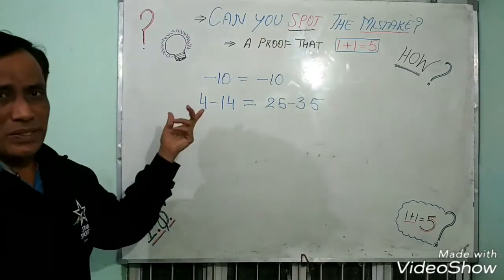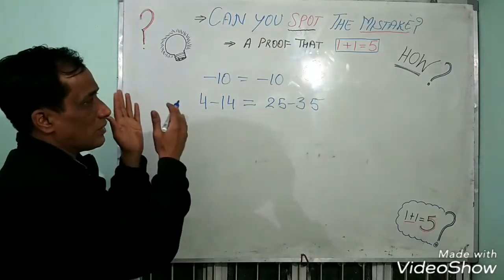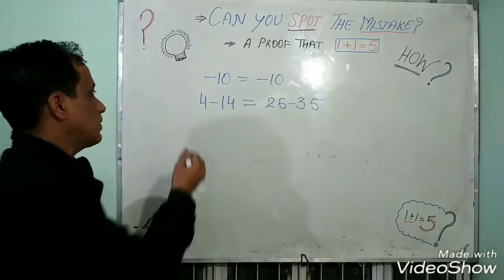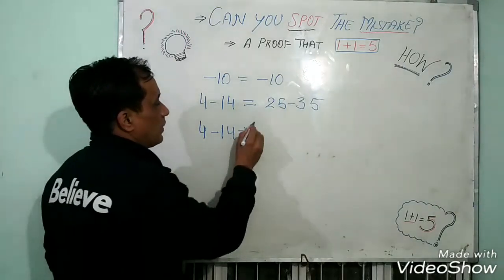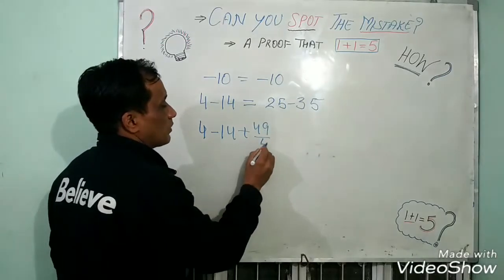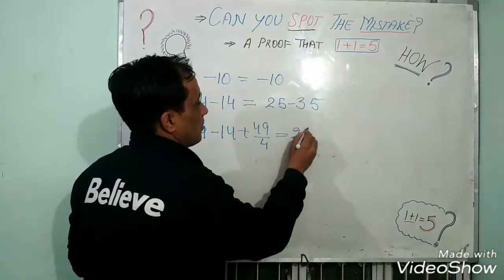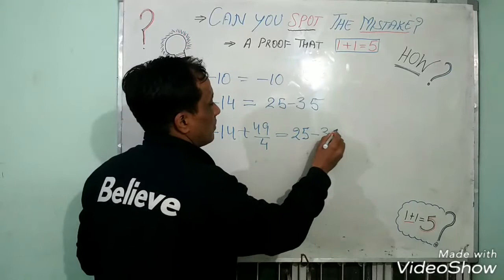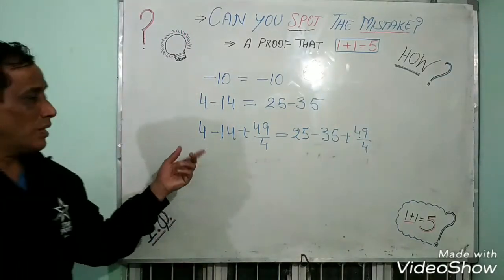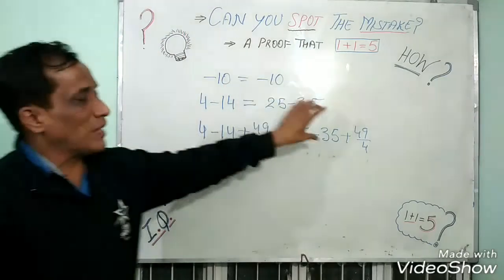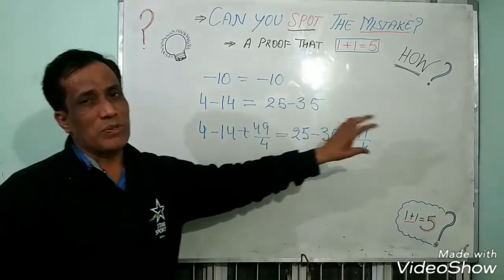According to Euclid, we can add the same thing on both sides. So now we are adding 49 by 4 on both sides: 25 minus 35 plus 49 by 4. Left hand side and right hand side, both sides I am adding 49 by 4.